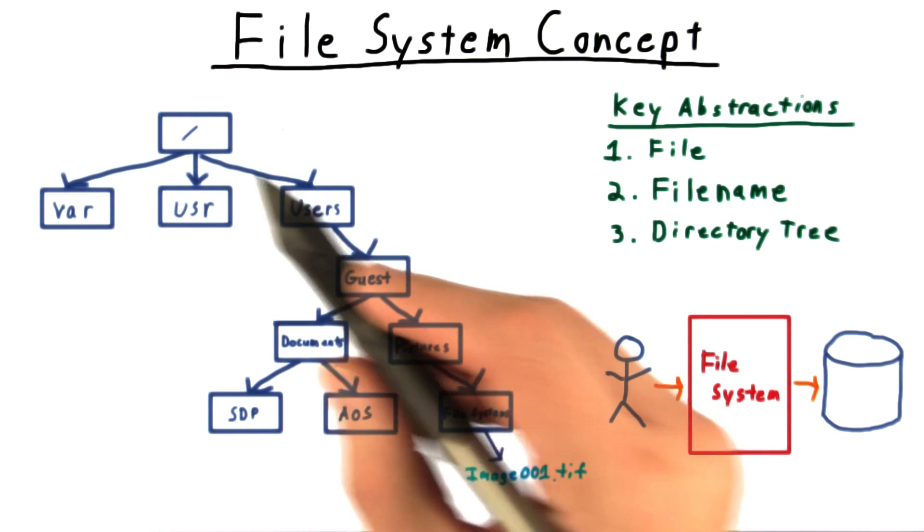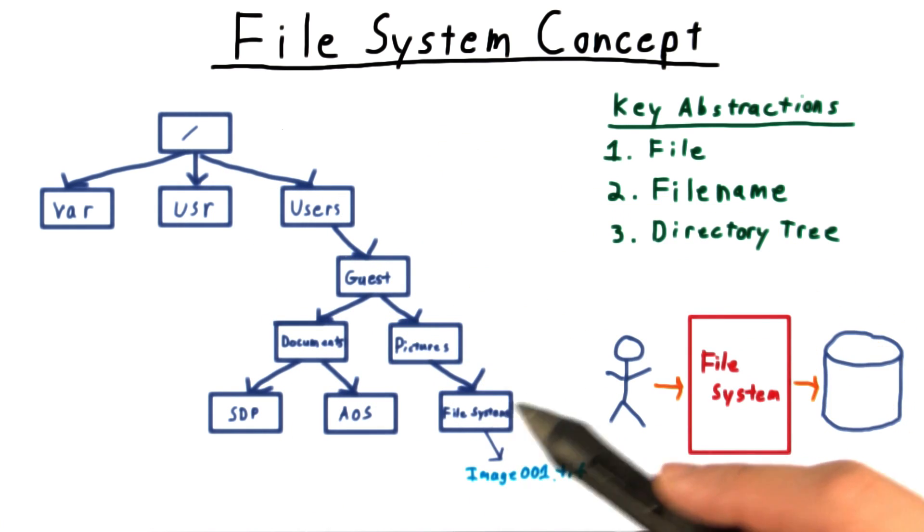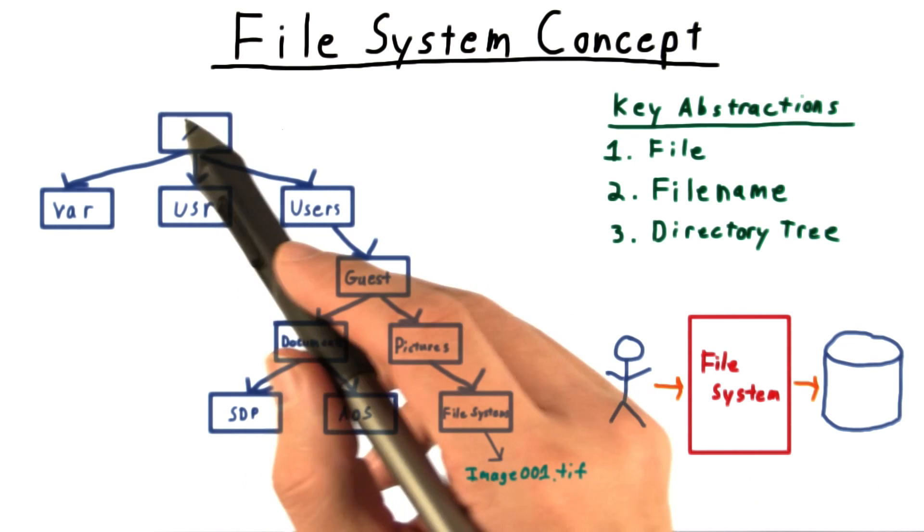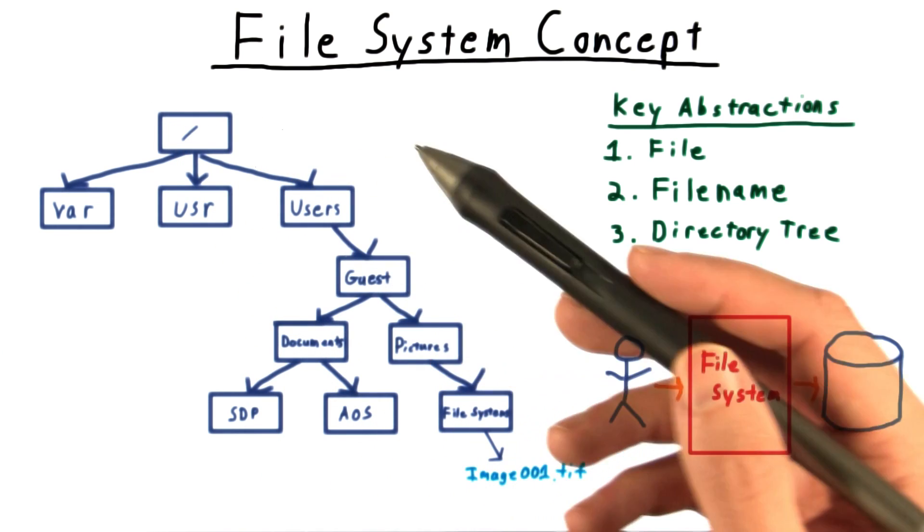This directory is called root, because if we think of this directory structure as an upside down tree, then this all-encompassing directory would be the root, or the base of the tree.